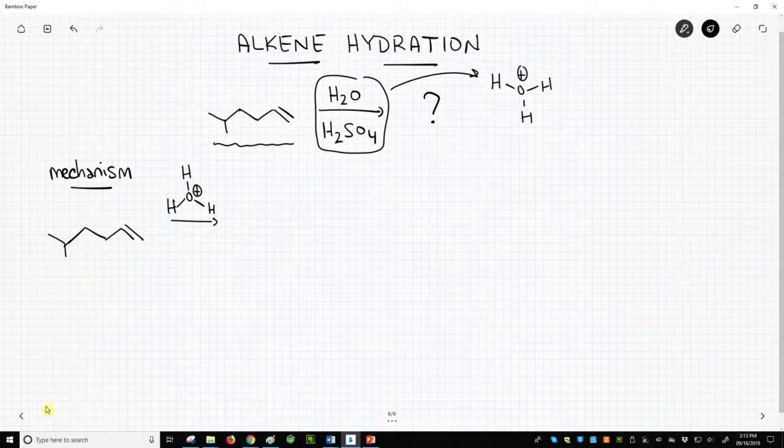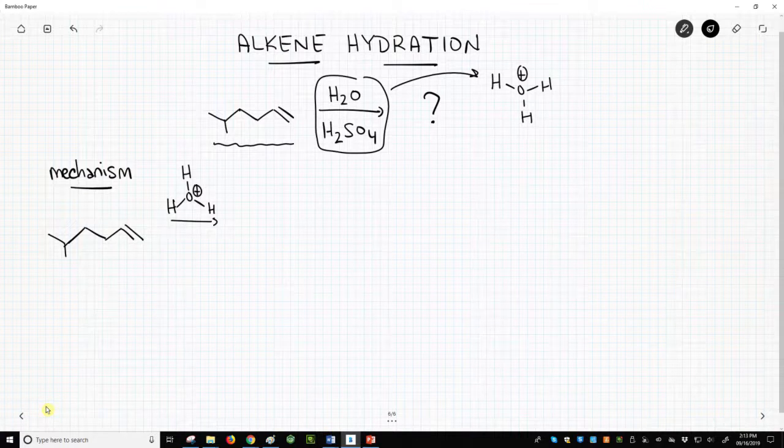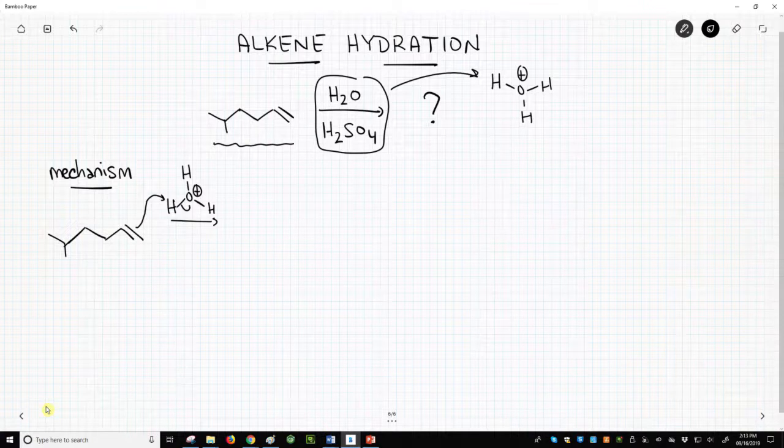The acid in our reaction mechanism protonates the alkene, the pi bond, to form a carbocation.